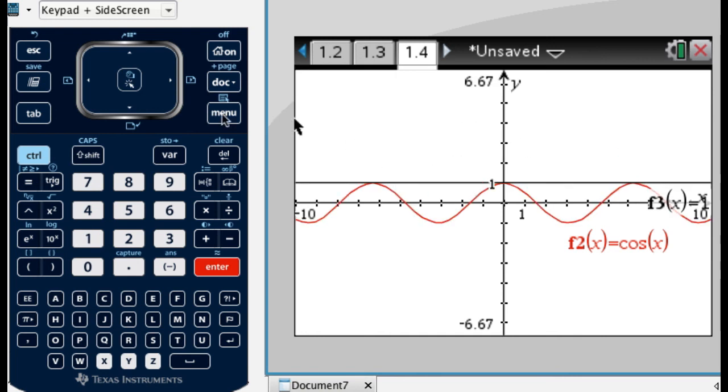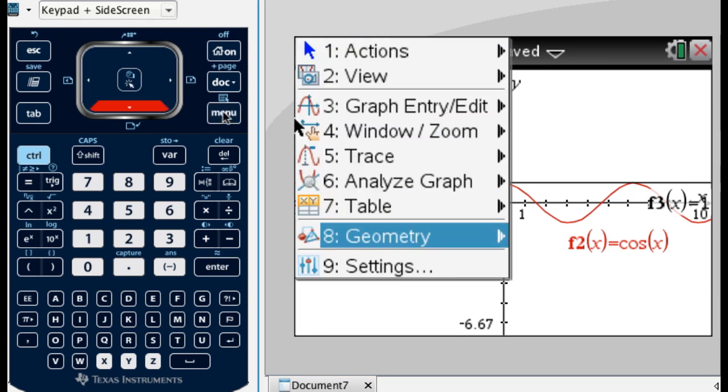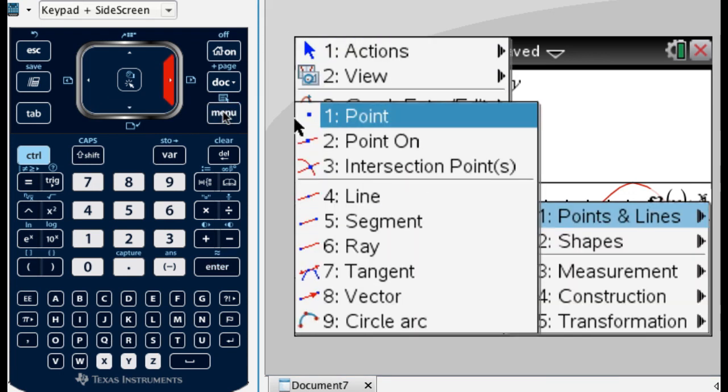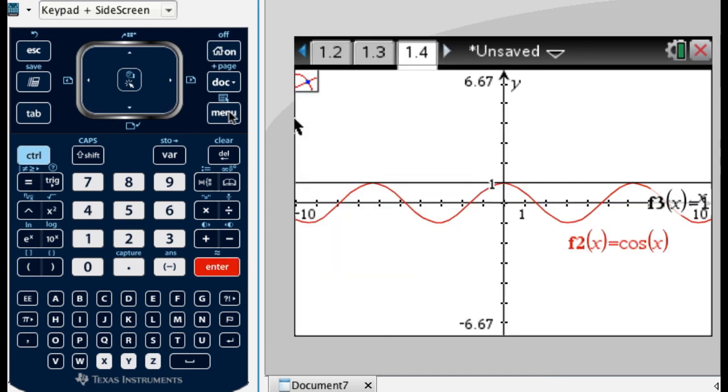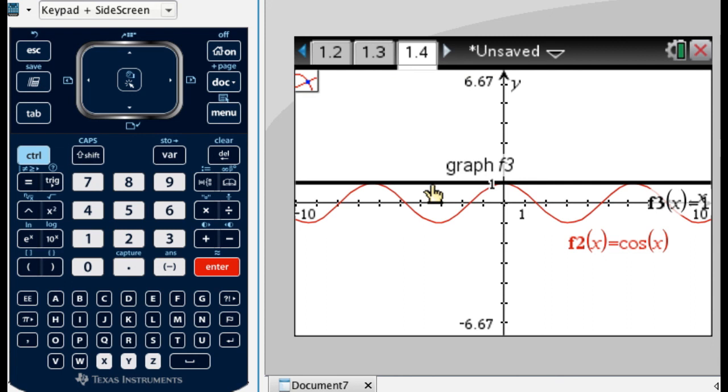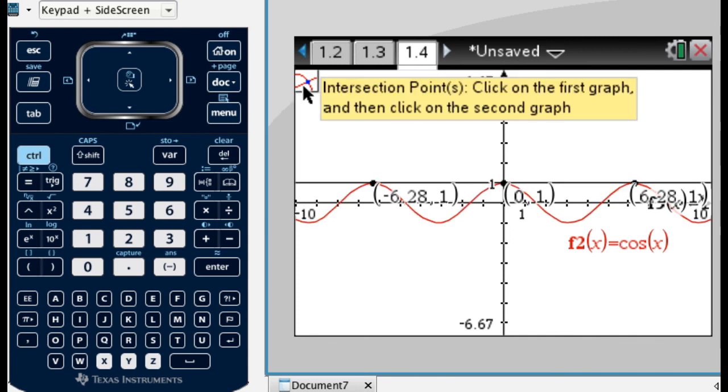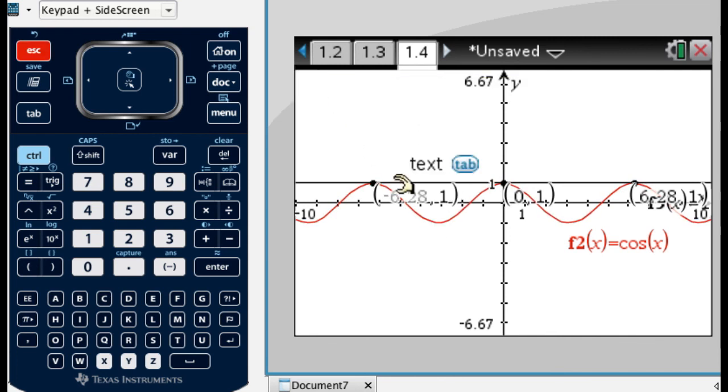And now this is a very famous key combination. I'm going to press menu. I'm going to go to 8 for geometry, 1 for points and lines, and 3 for intersection points. And to use intersection points, which you can see here, I'm going to click the first graph. So you arrow over it and click. Arrow over the second graph and click. And you can see this is still here. To get rid of this, press escape.